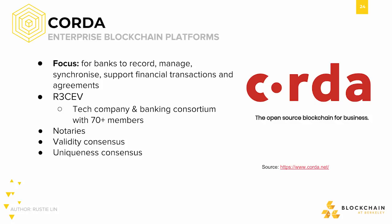Corda focuses on enabling banks to record, manage, synchronize, and support financial transactions and agreements through distributed ledger technology. Though the technology does not use blockchains per se, the superset distributed ledger technology refers to decentralized record management. This was a project first led by R3, a banking consortium attempting to unify major banking institutions around the world. Like Hyperledger Fabric, it has no native currency. Their system requires the participation of notaries to achieve consensus, serving as authority services signing off on previously seen transactions to provide uniqueness consensus.